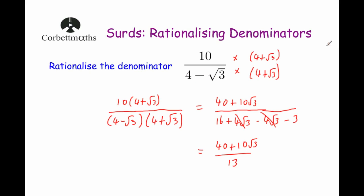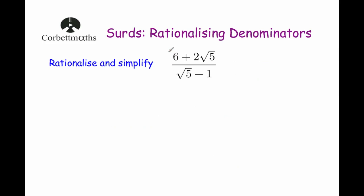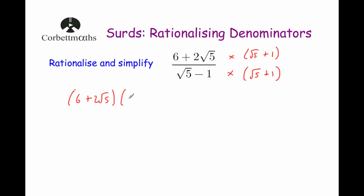Okay, let's have a look at another question. Rationalize and simplify 6 plus 2 root 5 over root 5 subtract 1. We're going to multiply both the numerator and the denominator by the conjugate of the denominator. Here we have root 5 subtract 1, so we're going to multiply both the top and the bottom by root 5 plus 1 — just changing the sign. Doing that gives us, in brackets, 6 plus 2 root 5 times root 5 plus 1, and on the denominator root 5 minus 1 times root 5 plus 1.